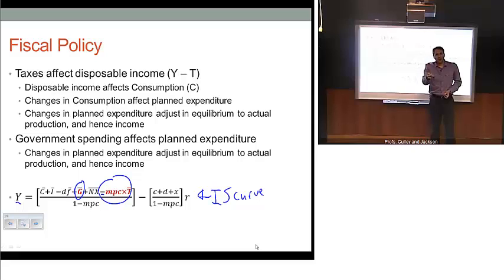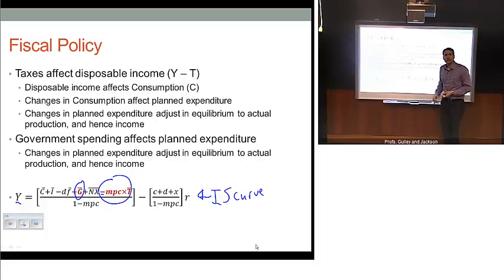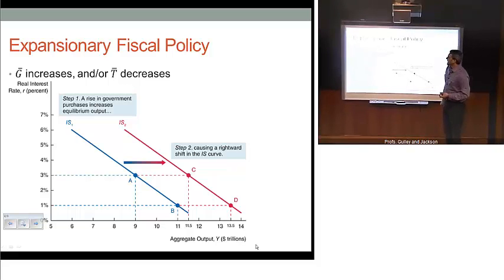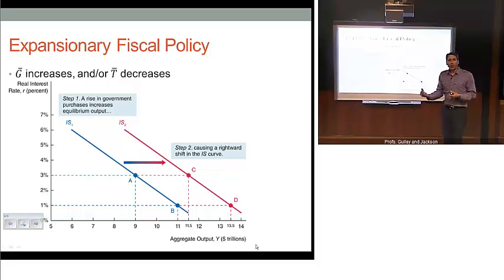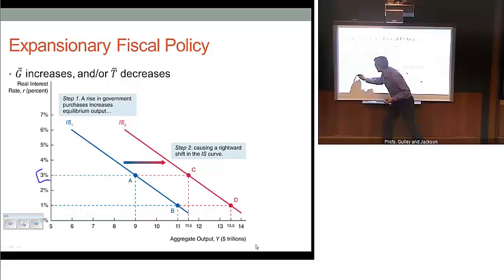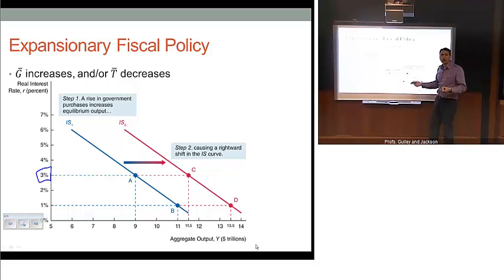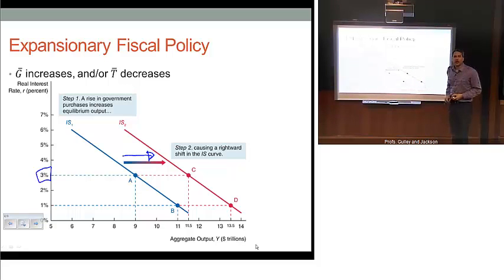Intuitively, if taxes are cut, disposable income rises, consumption goes up, that raises planned spending, and that triggers a higher level of income holding interest rates constant. We can see this in the graph: an increase in government spending, a cut in taxes, or both simultaneously are reinforcing. At any arbitrary interest rate, holding rates constant, increasing government spending or cutting taxes increases planned spending and hence production and income, resulting in a rightward shift of the IS curve. We're also holding inflation constant behind the scenes.